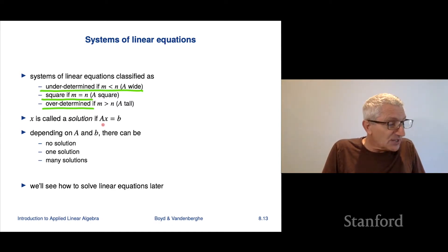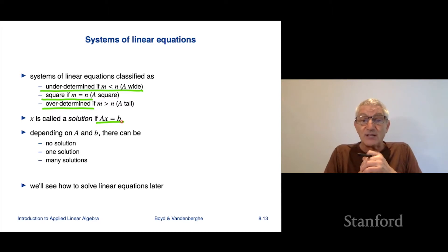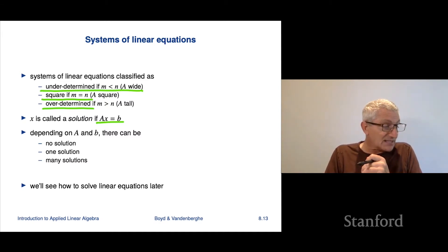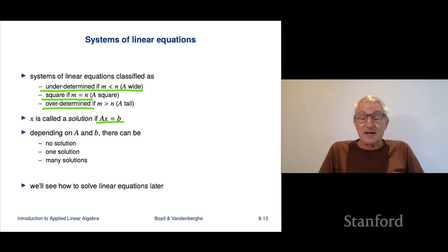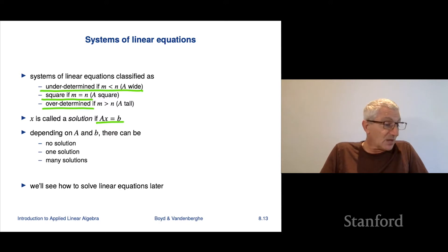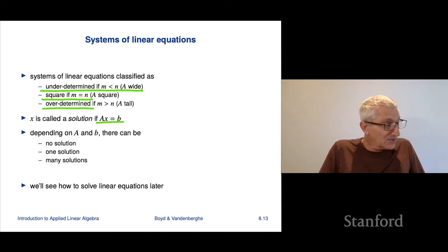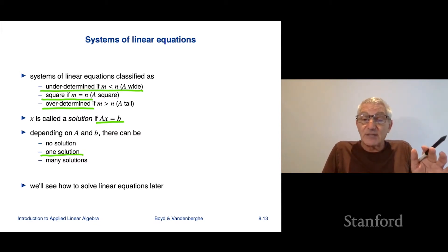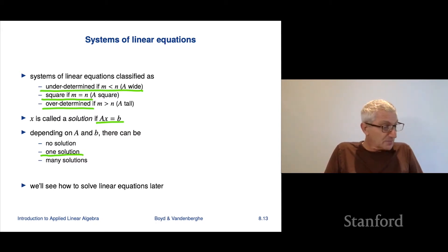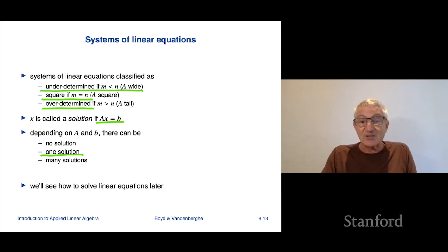A vector x is called a solution if Ax equals b — meaning it satisfies all the linear equations you have. Depending on A and b, there can be either no solution, one solution, or many solutions, and all three are possible. We'll have a pretty complete analysis of that by the end of the class, and more importantly, we'll be able to actually compute a solution — certainly when there is only one. That's later in the class; for now we're just talking about linear equations.